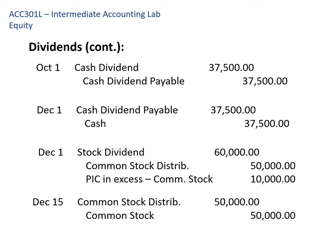Companies pay stock dividends when they may be short of cash but still want to reward shareholders. Stock dividends transfer part of stockholders' equity from retained earnings to paid in capital. We debit stock dividend for the fair market value of the shares given to shareholders — $60,000. We credit common stock distributable (a temporary placeholder account under common stock) for $50,000 at par, and credit paid in capital in excess of common stock for the difference. Later, when we actually issue the shares, we debit common stock distributable and credit common stock, both at par.